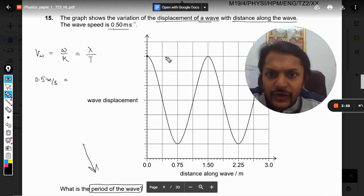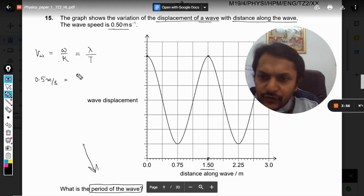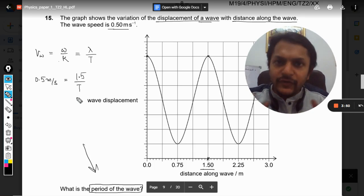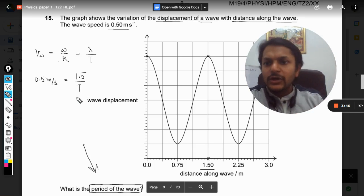Wavelength we have to find from this point to this point. It is 1.5, so wavelength will be taken as 1.5, and T is the time period. So we need to find what is the time period.